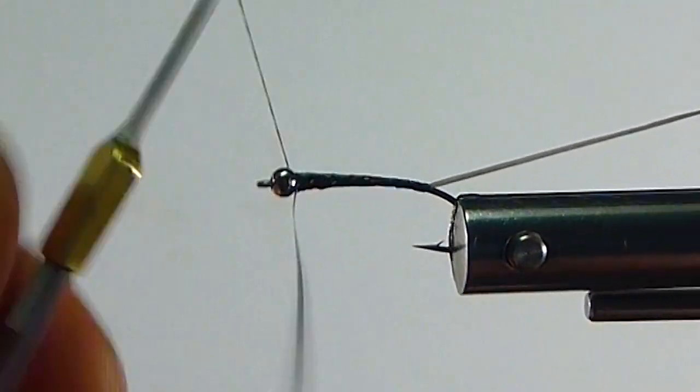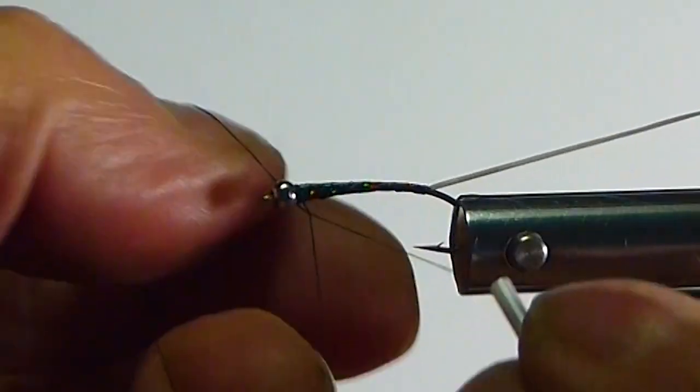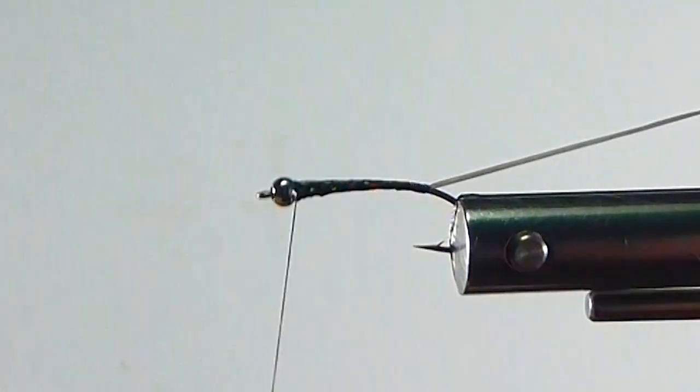All the way up, covering the whole shank. Tie it off. Get a half hitch in there so it doesn't lose it.